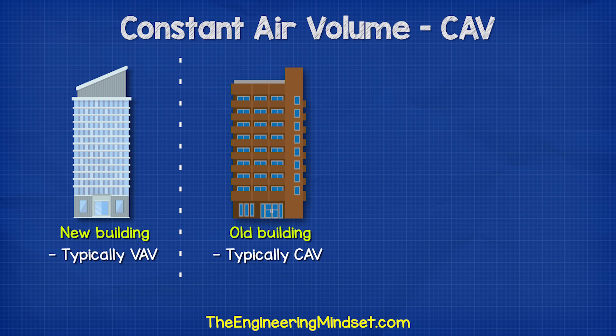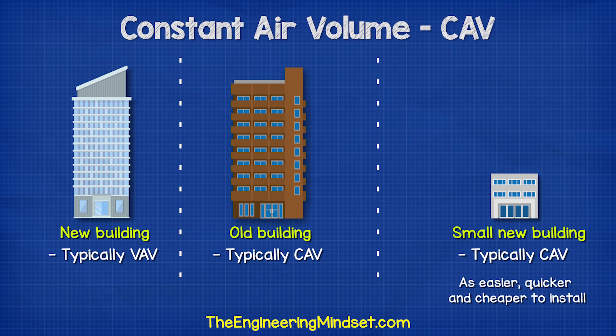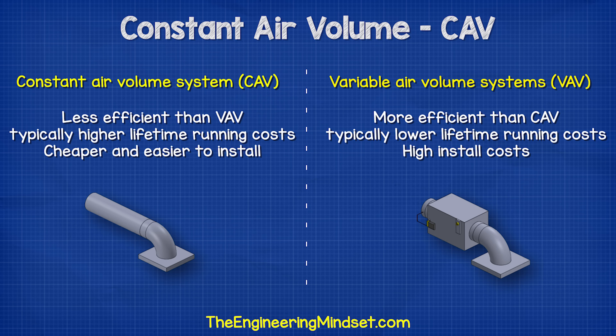Although constant air volume systems are becoming less common in newer buildings, you might still find them being installed in smaller buildings because they're easier, quicker and cheaper to install. Although the initial installation cost is lower, the lifetime running cost of the system will potentially be far higher than a VAV system because CAV is less energy efficient.